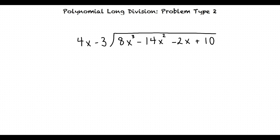The leading term of the dividend is 8x cubed which has the power of 3 and the leading term of the divisor is 4x which has the power of 1. In this case our leading terms are the first terms from each of the binomials but this is not always the case.